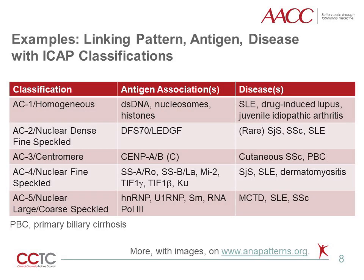Standardization of pattern reporting for ANA is important clinically. Universal language about ANA results can point providers to targeted subserology testing to determine which antigens may be associated with the pattern. This, in turn, can point to the likely clinical disease and aid in diagnosis, evaluating prognosis, and monitoring patients with known disease. Shown here as examples are the first five ICAP classification numbers with HEP2 IFA pattern, likely antigens targeted, and likely disease associations.